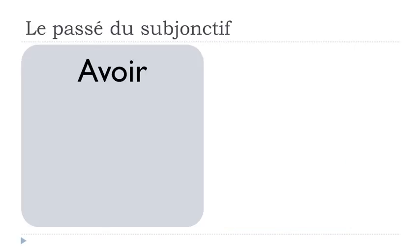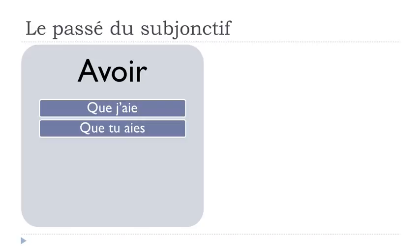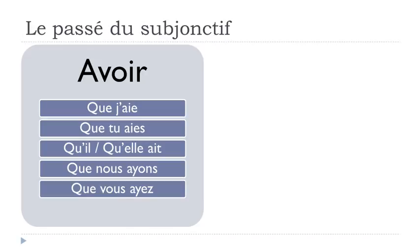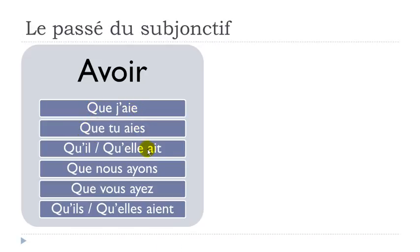Now let's review one more time the subjonctif présent form of avoir and être, because these are the first forms we'll use to construct the passé du subjonctif. Avoir goes like: que j'aie, que tu aies, qu'il ait, qu'elle ait, que nous ayons, que vous ayez, qu'ils aient, qu'elles aient.